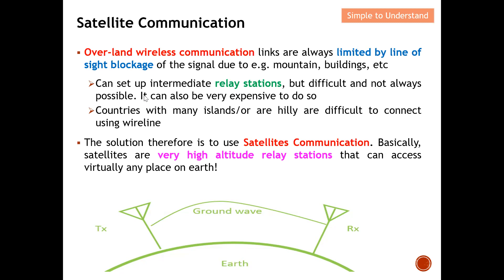We can resolve this by setting up intermediate relay stations, but this is difficult and not always possible — it can also be very expensive. For example, if there is a building, a relay can amplify or redirect the signal to achieve line of sight. But setting up relays from one point to another over several kilometers can be a very expensive solution.